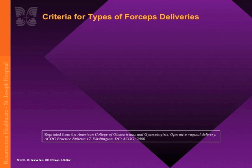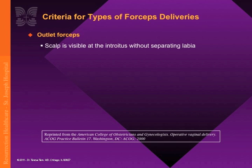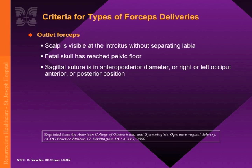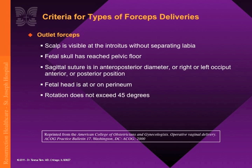The criteria for the four types of forceps deliveries include the following. Number one, outlet forceps criteria is fulfilled when the fetal scalp is visible at the introitus without separating maternal labia. The fetal skull has reached the pelvic floor. The sagittal suture is in the anterior-posterior diameter or right or left occiput anterior or posterior positions. The fetal head is at or on the maternal perineum. Rotation does not exceed 45 degrees.